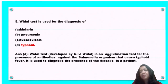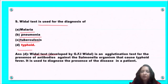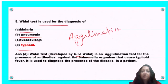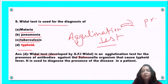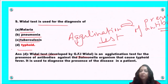Next question: the Widal test is used for the diagnosis of malaria, pneumonia, tuberculosis, or typhoid? The Widal test was developed by G.F.I. Widal and it is an agglutination test used to detect the presence of antibodies. This test is used for the diagnosis of typhoid. So option D is the correct answer.